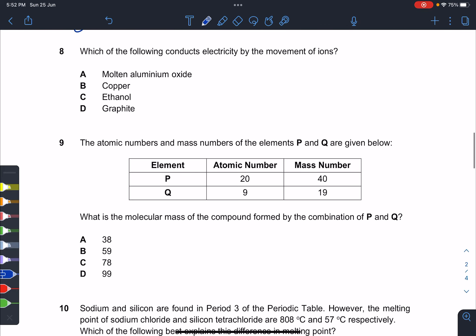Question 8: conduct electricity using mobile ions. Mobile ions—isn't it just ionic? Which one is ionic? A is ionic, B is a metal, C is covalent, D is covalent but giant molecular.